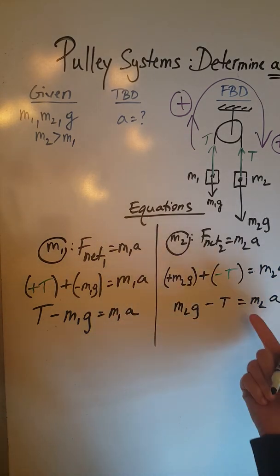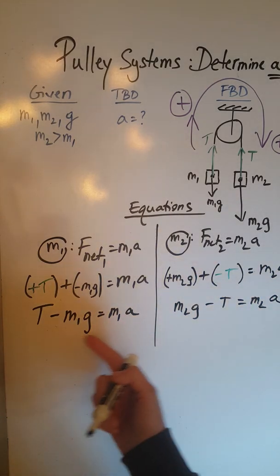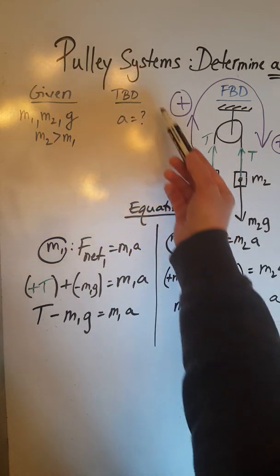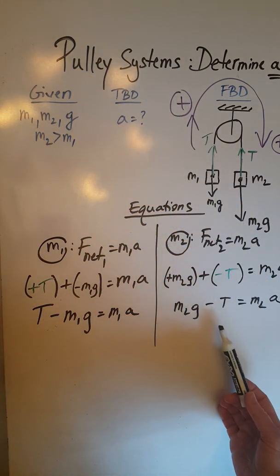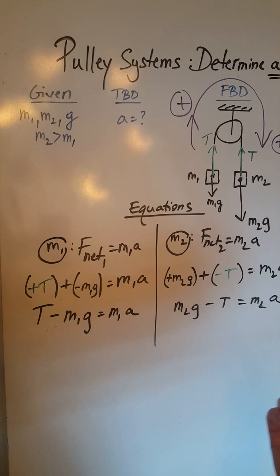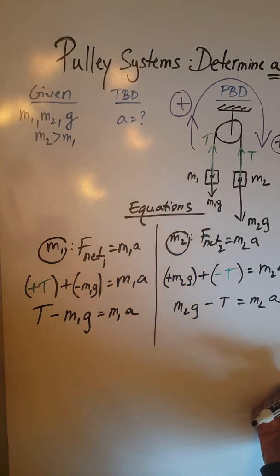So now we have one equation and another equation. M1, M2 and G are given. We are looking to determine the acceleration. Well in these two equations we have two unknowns: we have the acceleration and we have the tension. So we have a system of two equations with two unknowns.